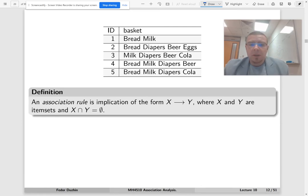Now, an association rule is implication of this form: X, then we have a right arrow, and then Y. We can read it as X implies Y or as if X then Y. X and Y here are itemsets, and they're supposed to be non-overlapping. So the intersection of X and Y is the empty set.